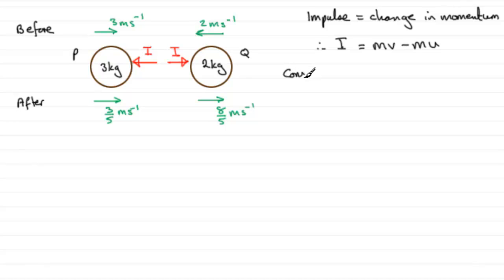So I'm going to consider P. But as I say, you could consider Q. Now if I'm considering P, I'm going to take the direction of the impulse, that is to the left, as my positive sense. If you're dealing with Q, take the positive sense to the right.